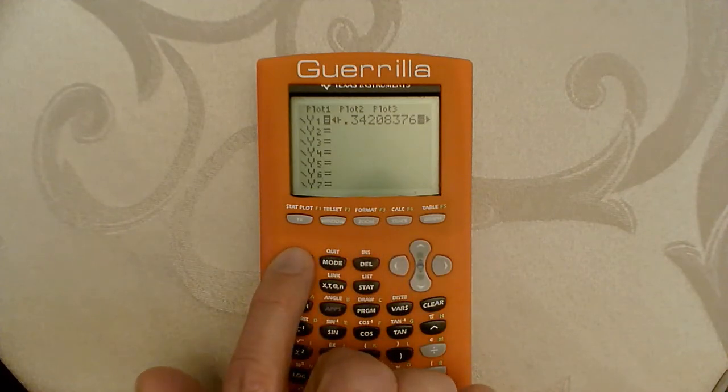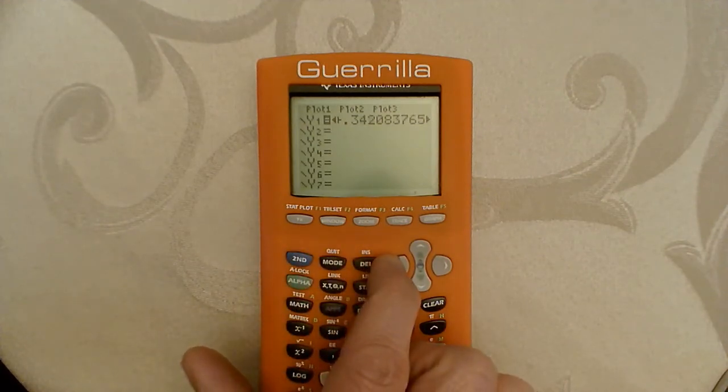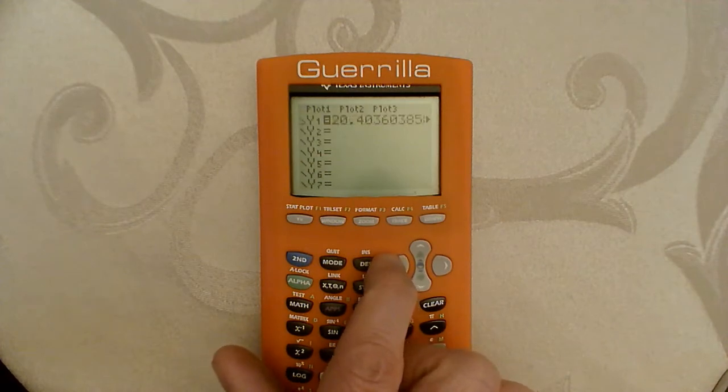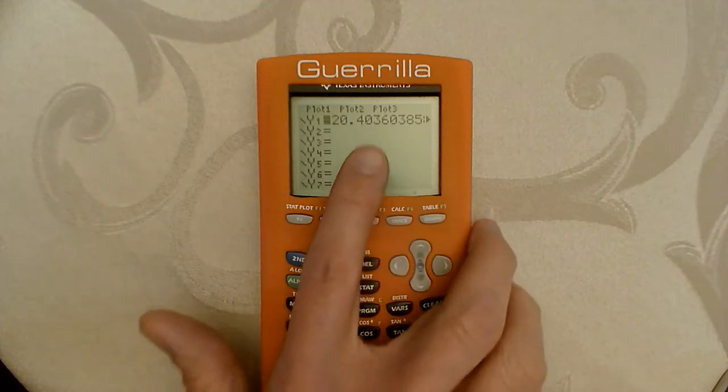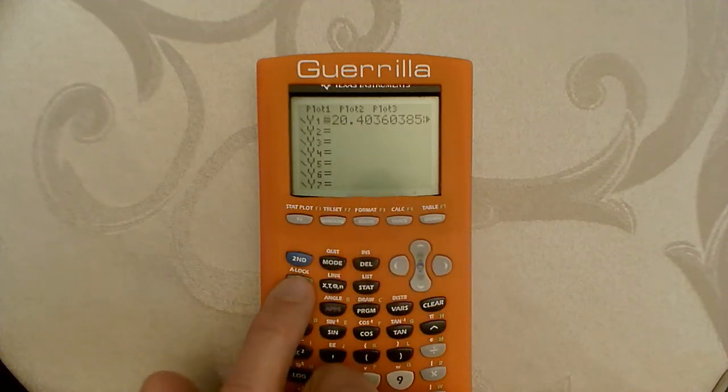All right, but what we want to do is do a scatter plot. So what I'm going to do is actually I'm going to turn off this line for right now. I don't have to just delete it, I can go and change the equal sign, and now that turns this equation off. So it will not graph this line for right now.